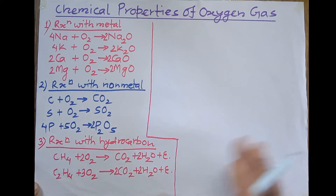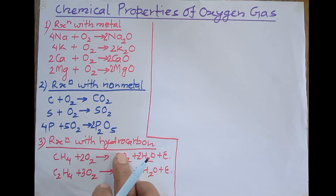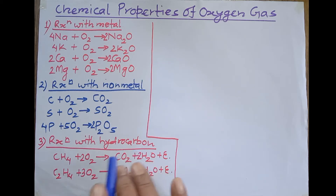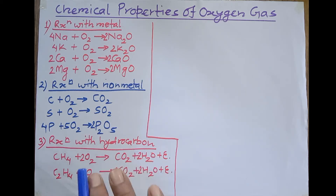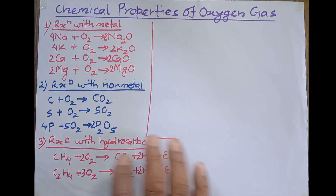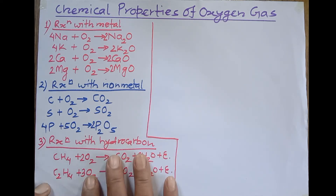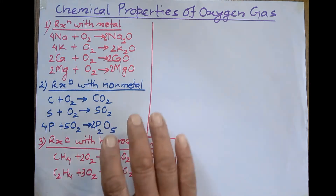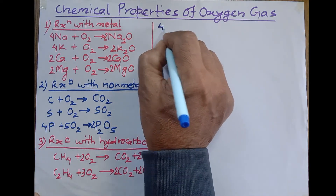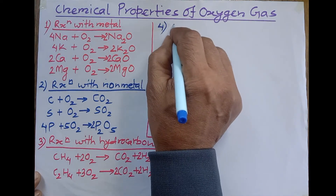Hydrocarbon is an organic compound. Other organic compounds like carbohydrates, ethyl alcohol, oil, petrol, wax, etc., also burn in air and form carbon dioxide. This is also a chemical property, but the reactions are more extensive so they are not listed here in detail.